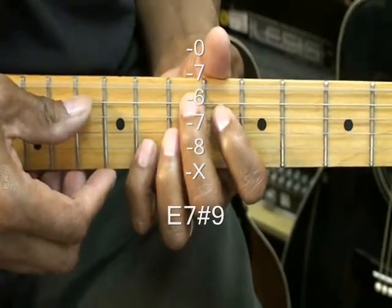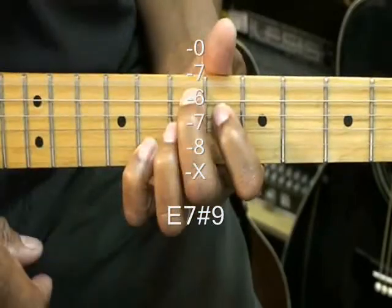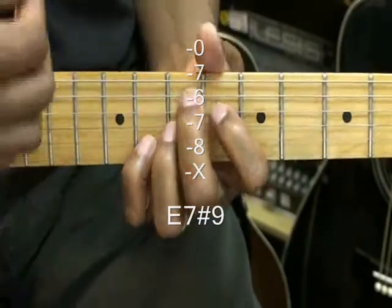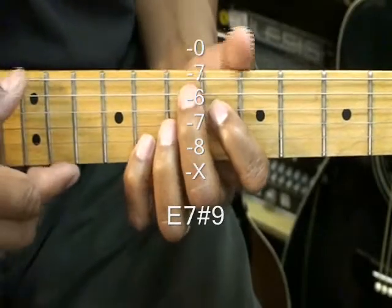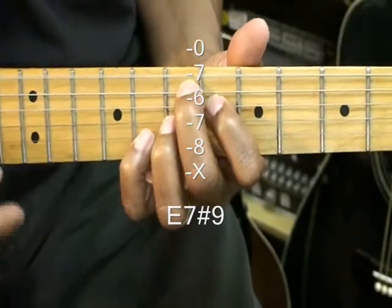Now the E string at the top is fine. So it's going to sound like that. But that is E7 sharp 9.